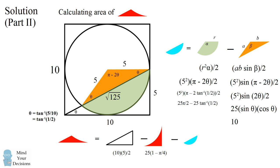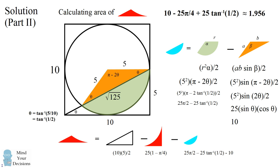Now we have a formula for the region of the circle that we want: it's 25 pi over 2 minus 25 times the inverse tangent of 1/2, minus 10. We have all the different areas of the pieces, and we can simplify this formula to get the area of the lower left-hand corner equals 10 minus 25 pi over 4 plus 25 times the inverse tangent of 1/2. This is approximately 1.956.